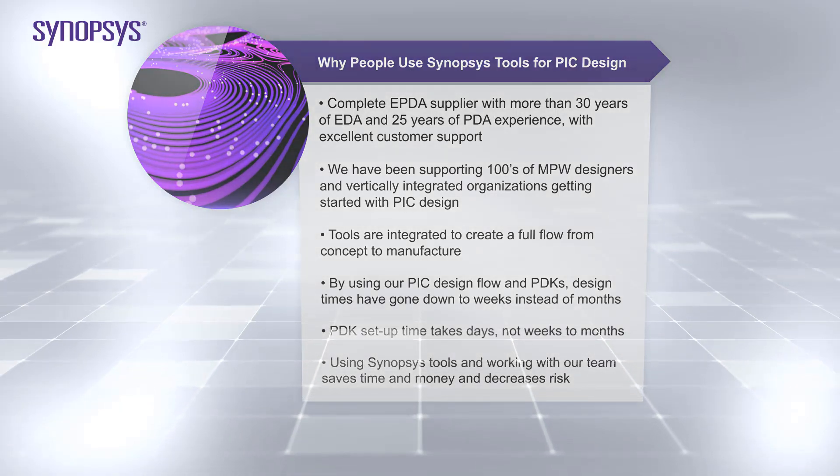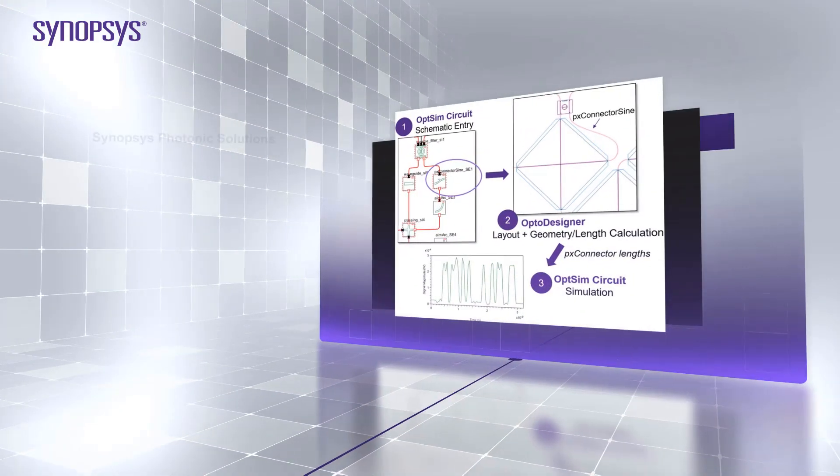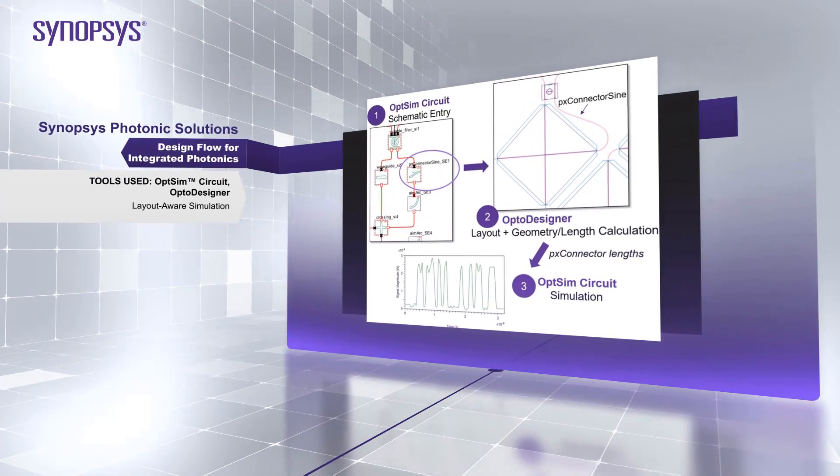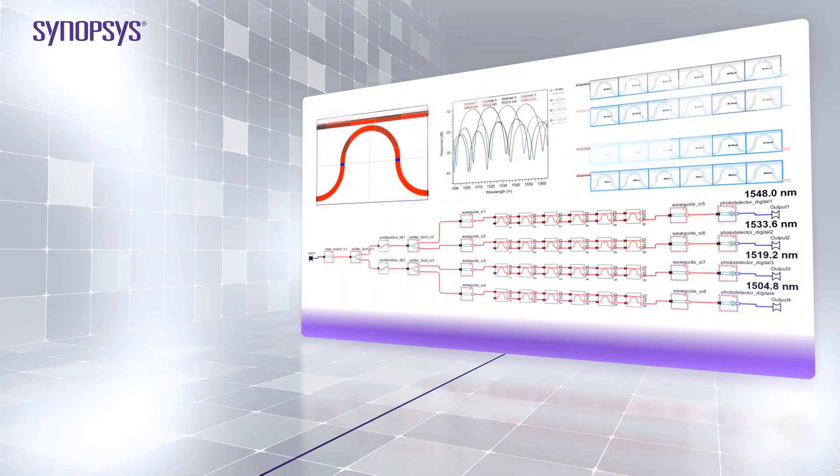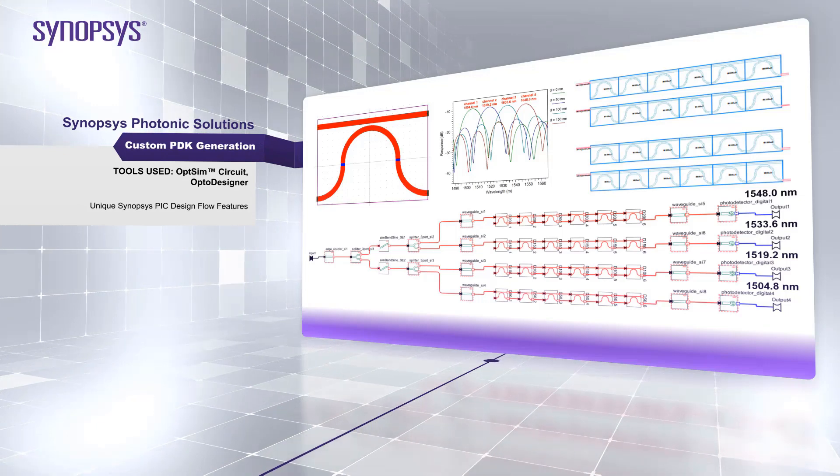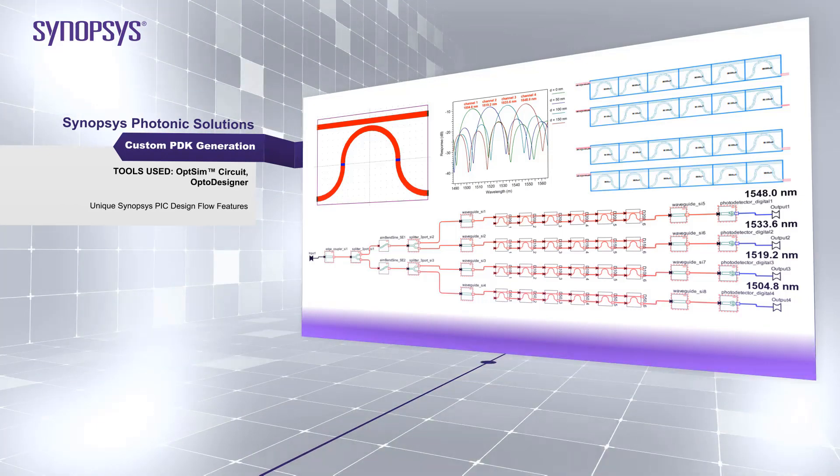The Synopsys flow also differentiates itself with tools such as the S-Matrix custom PDK generation utility in the RSOFT component design suite. You can create custom components and IP that is not included in an official foundry PDK, thereby enabling custom and semi-custom designs in OpsSim Circuit and OptoDesigner.